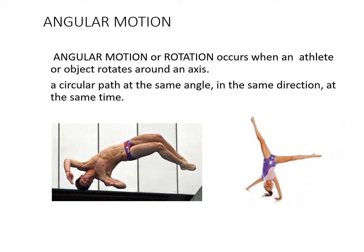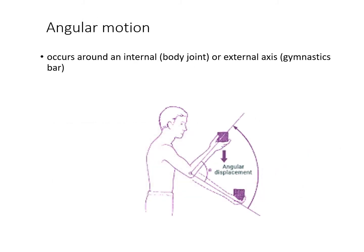Angular motion could be called rotation in layman's terms, but try to use the term from the study design. It refers to when an athlete or object rotates around an axis on a circular path, such that body parts travel different distances at the same time — classic examples include swimming and gymnastics. Angular displacement is the change of position over time, while distance is simply the territory covered.